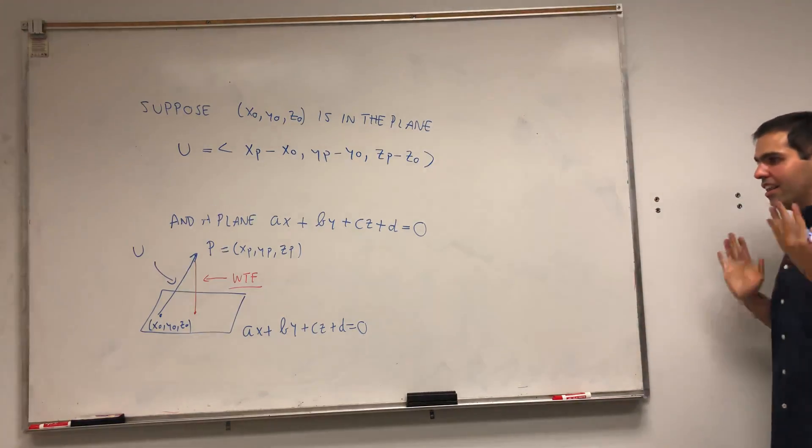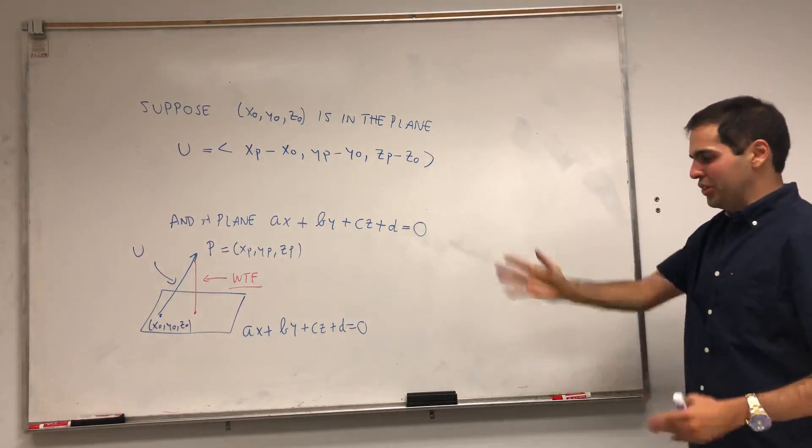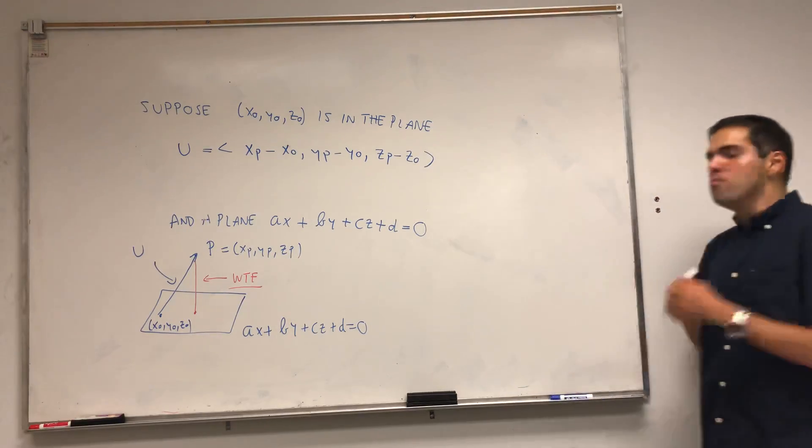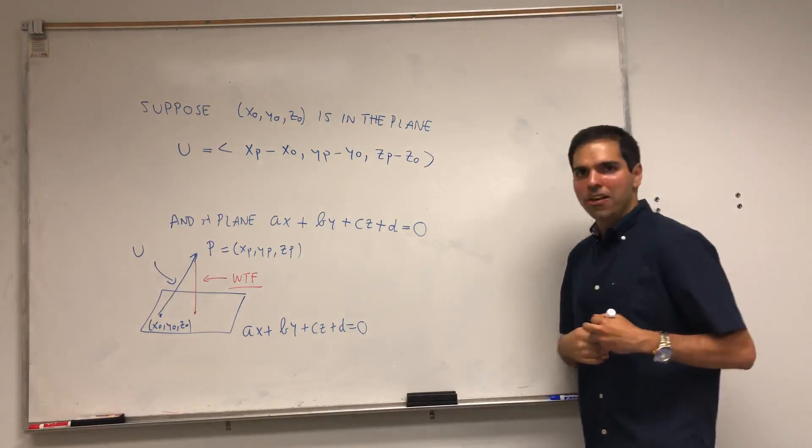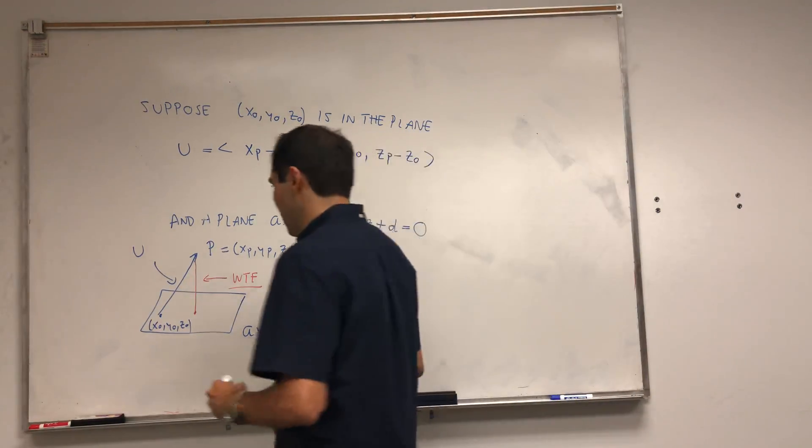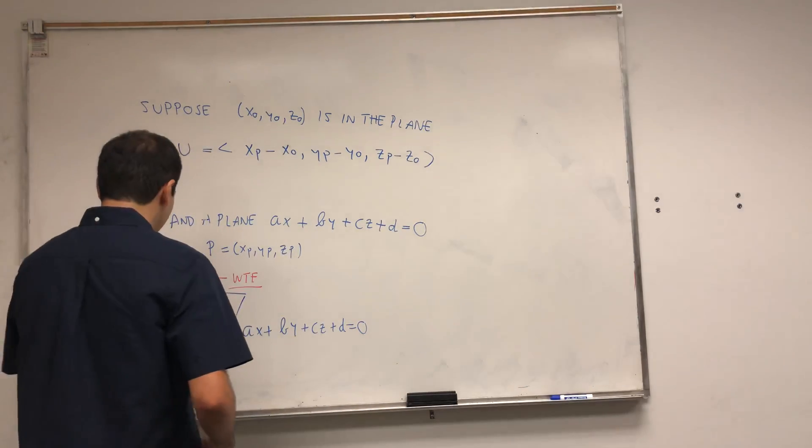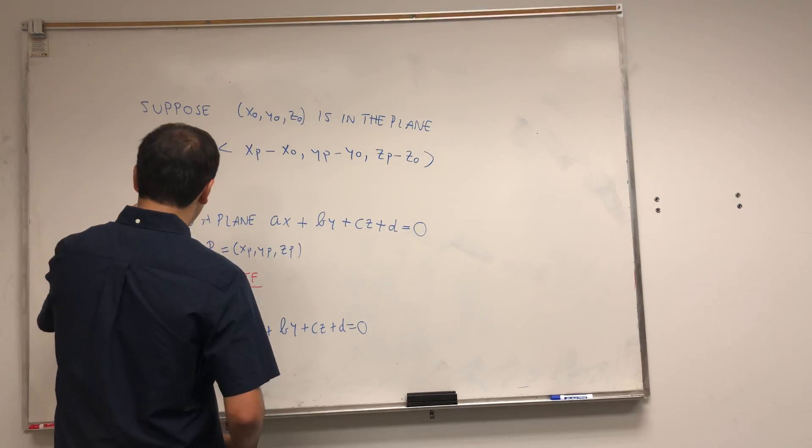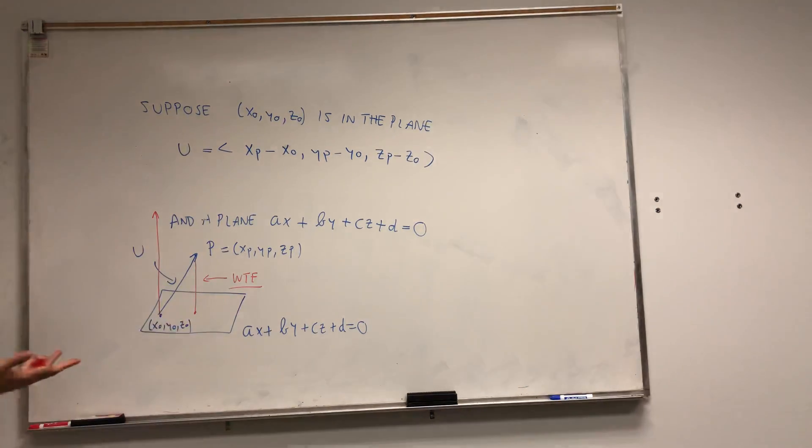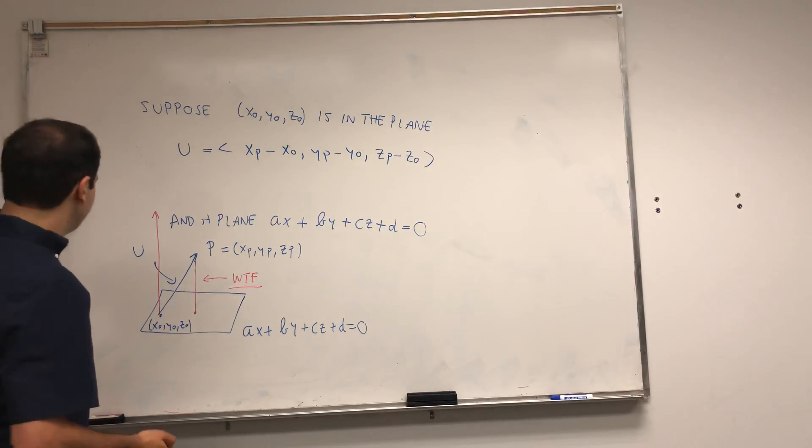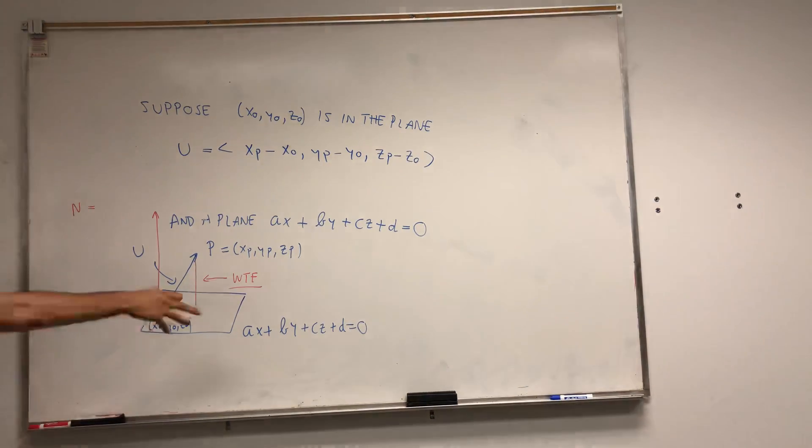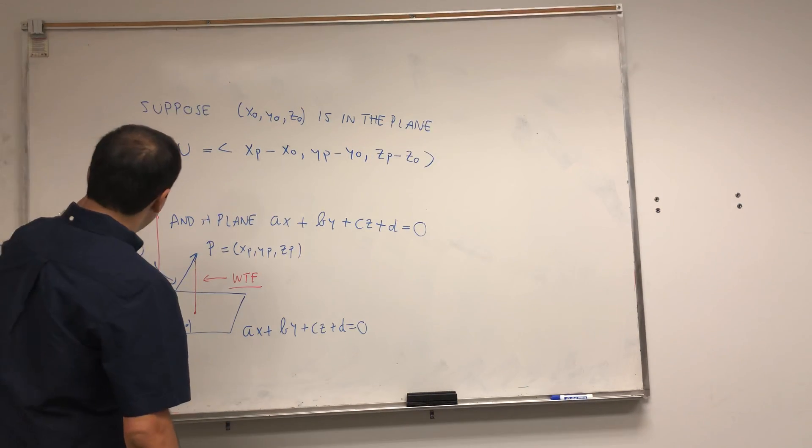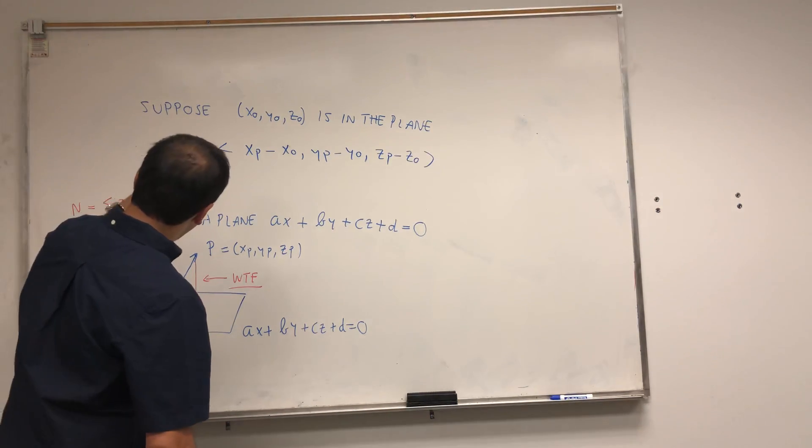That is one thing. We have this vector U. The other thing, the most important thing to know about planes, is this normal vector business. There is a vector that's actually perpendicular to this plane, and it's very easy to find.